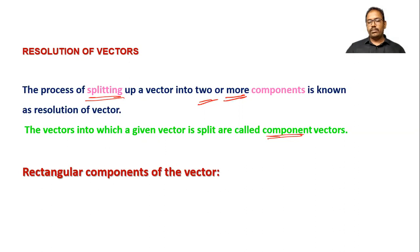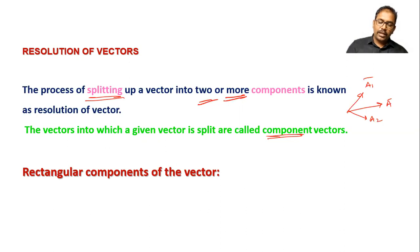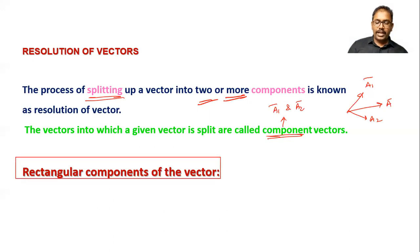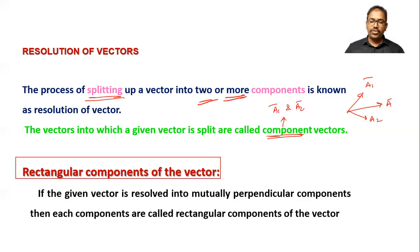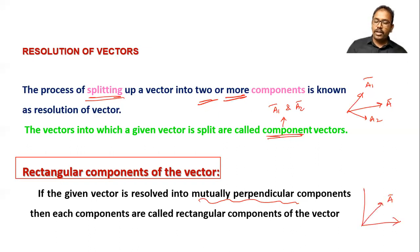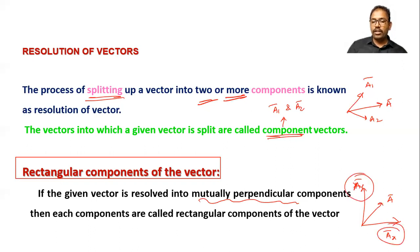Rectangular component. If vector a-bar is split up into a1-bar and a2-bar, then a1-bar and a2-bar are components of a-bar. Rectangular component means the components which are mutually perpendicular. If vector a-bar is resolved into ax-bar and ay-bar, and if ax and ay are perpendicular to each other, then they are called rectangular components of vector a-bar.